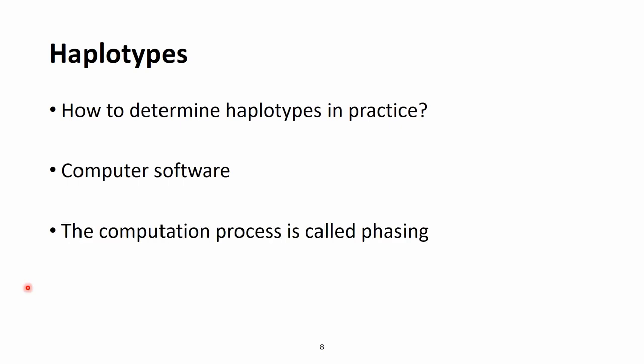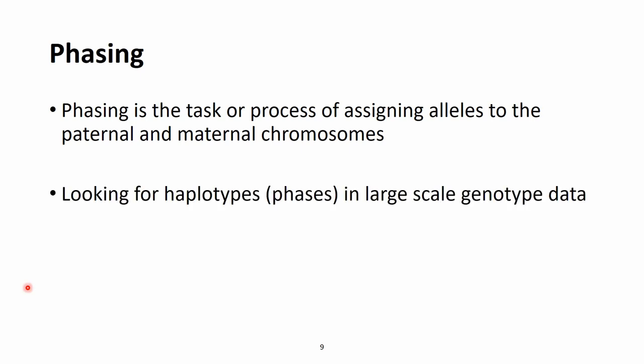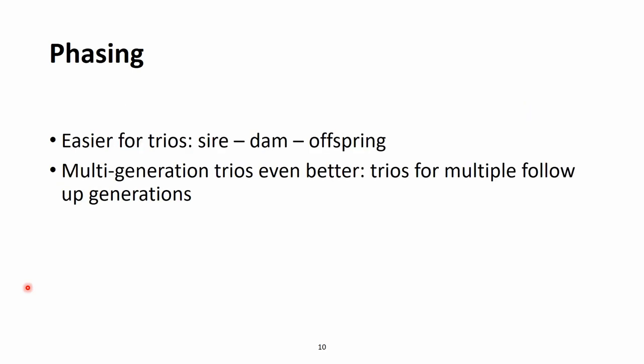This computation process is called phasing. Phasing is the task of assigning alleles to the paternal and maternal chromosomes. It looks for haplotypes or these so-called phases in large-scale genotype data and solves the complex problem of assigning correct haplotypes. This is easier if so-called trios are genotyped — the sire, dam, and offspring, or in the case of humans the father, mother, and their child — or even multi-generational families including grandparents are genotyped.